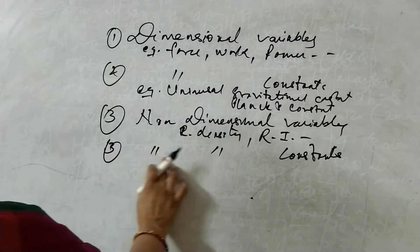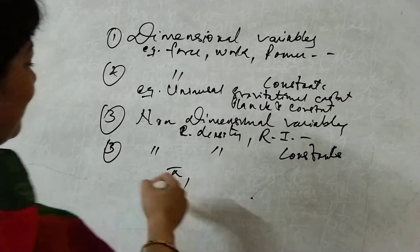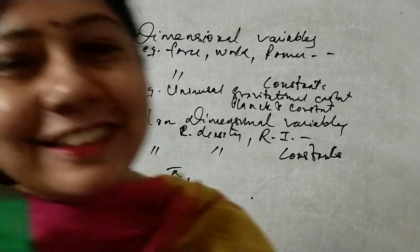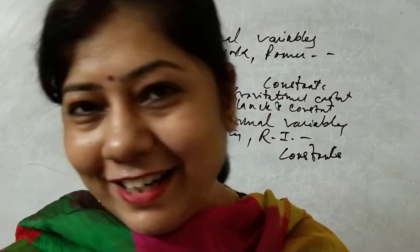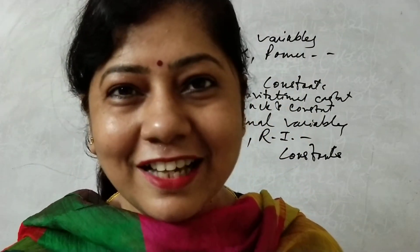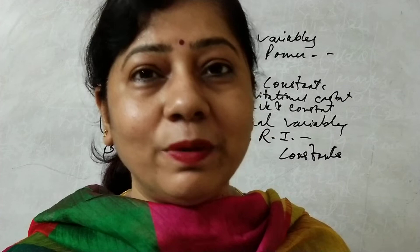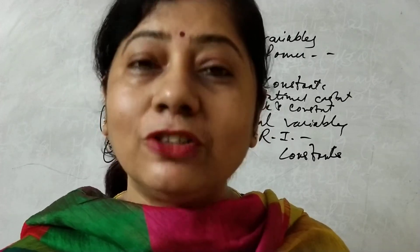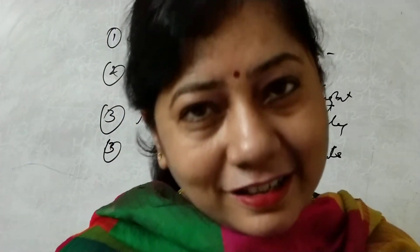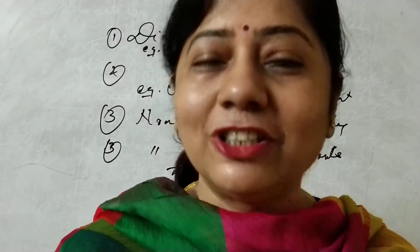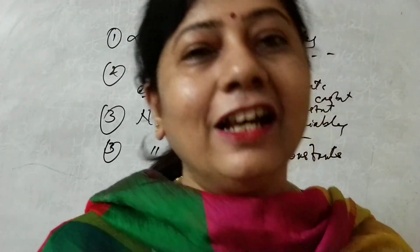For non-dimensional constants, we take the example of pi. Pi has no dimension, but its value is fixed — 22/7 or 3.14. So pi is under the category of non-dimensional constants. We have now covered all four categories.